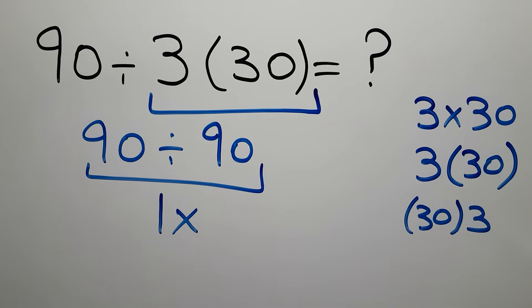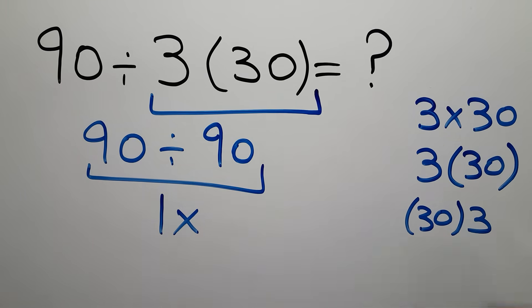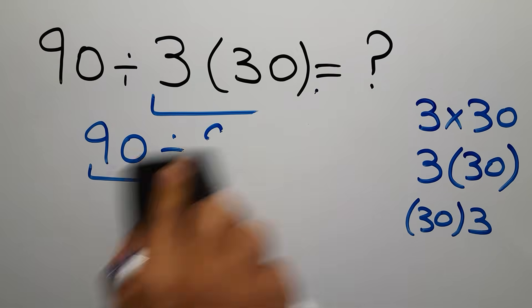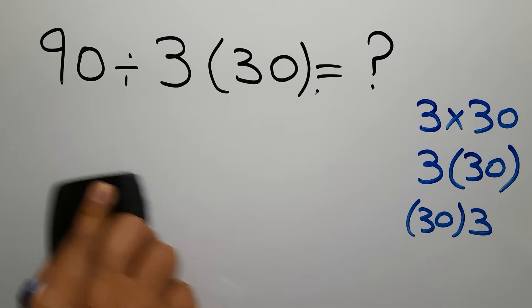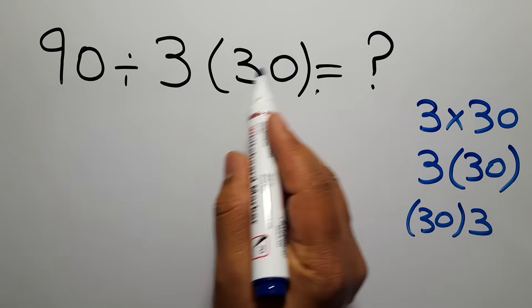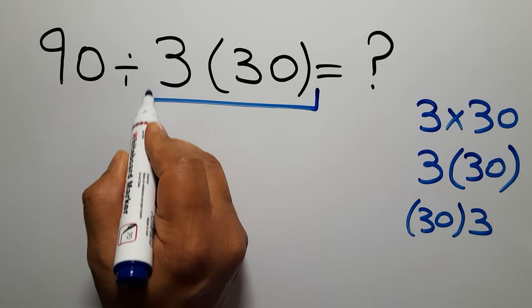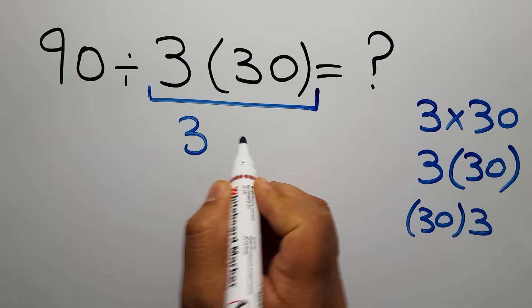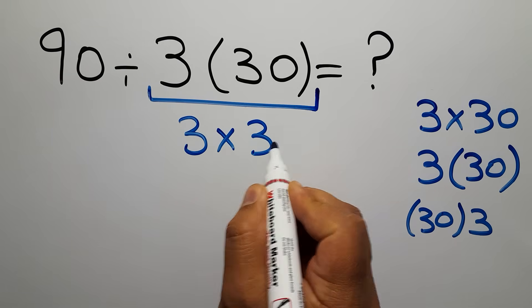Okay, so here we can write instead of 3 then parentheses 30 we can write 3 times 30.